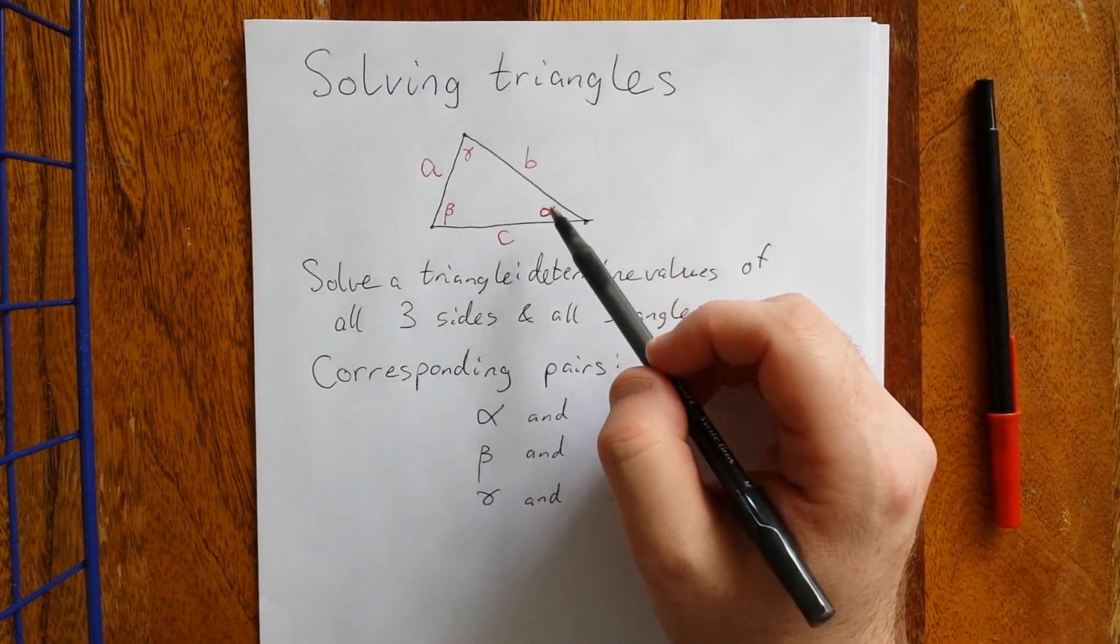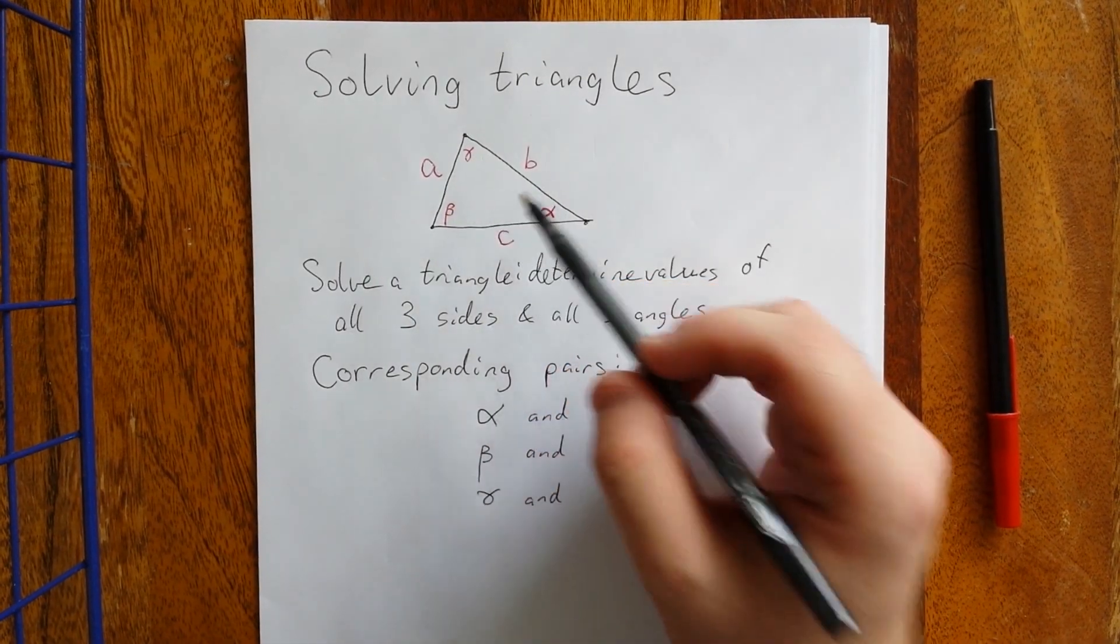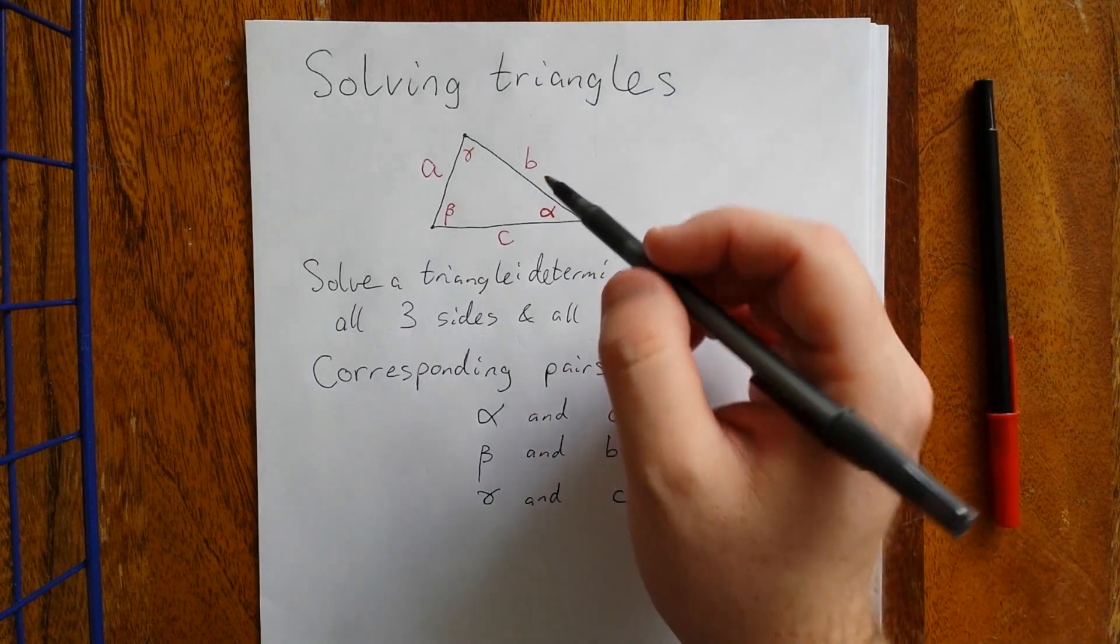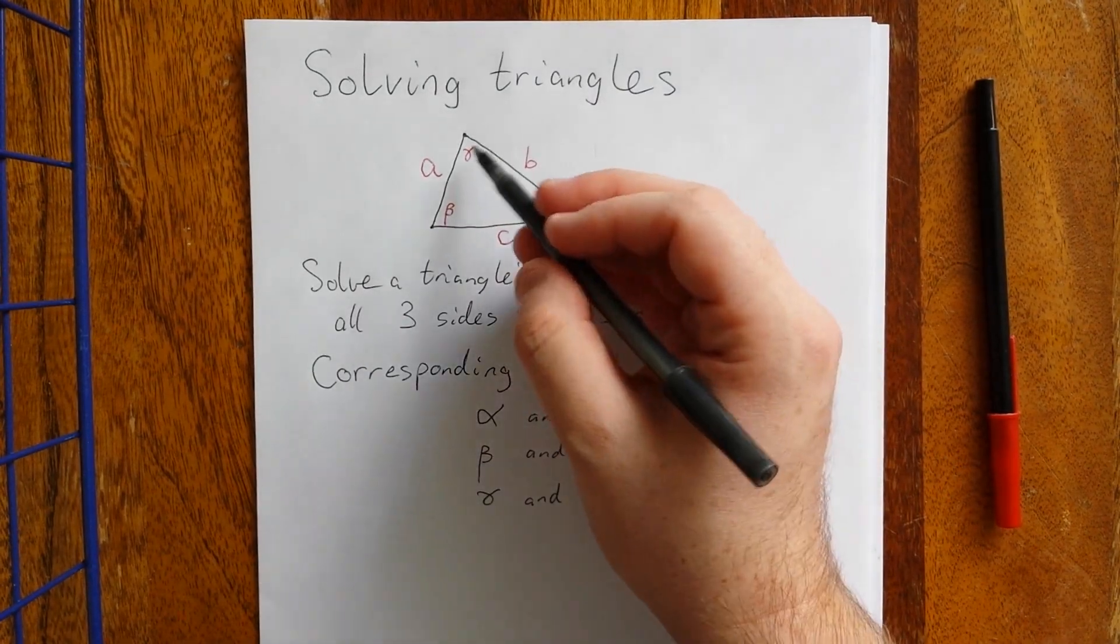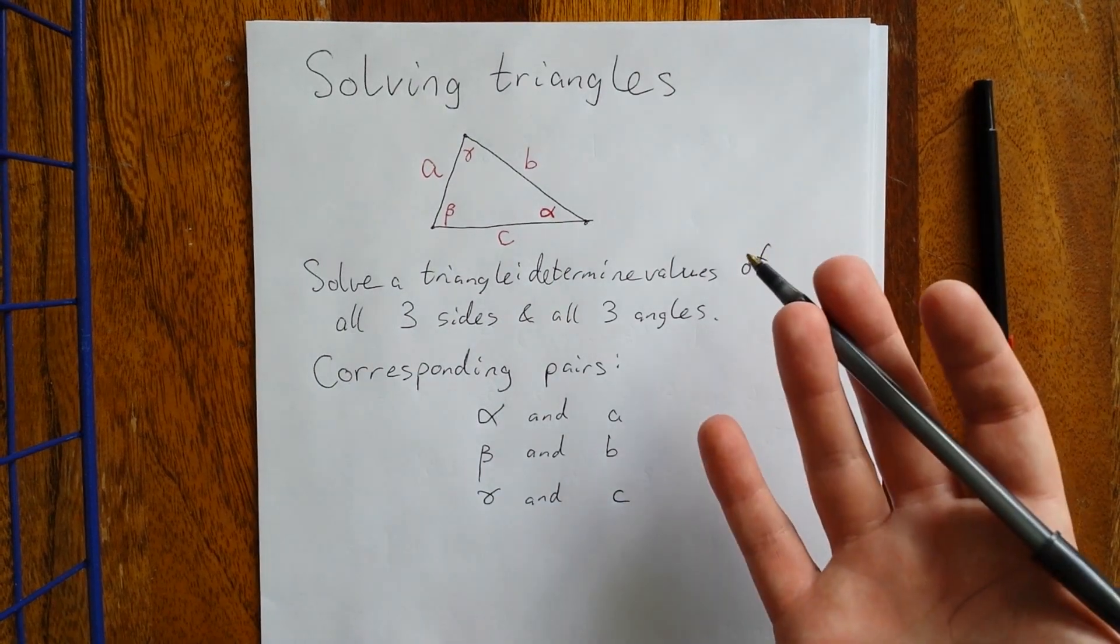Some books like to use capital A, capital B, and capital C for their three angles. I don't like that, and there's two reasons. One, when I write a side C and an angle C, they look really similar to each other. How are you to distinguish between the lowercase and the capital?